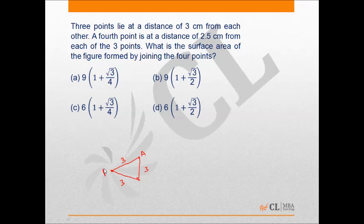Let us say the vertices are a, b and c. Now the 4th point is at a distance of 2.5 cm from each of the 3 points. Now this point will not be in the same plane.